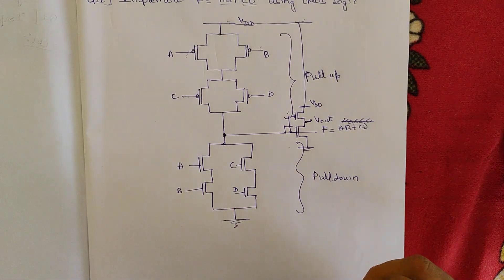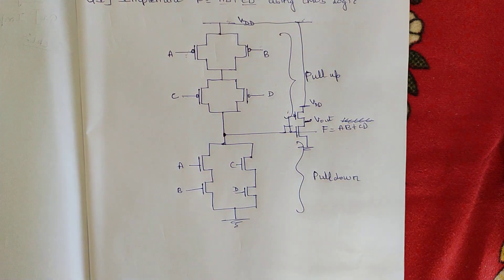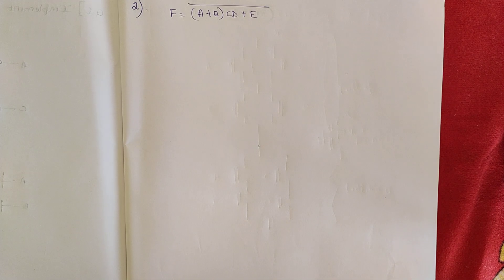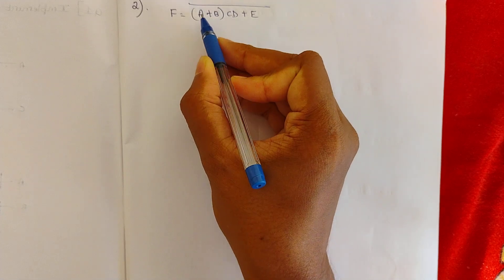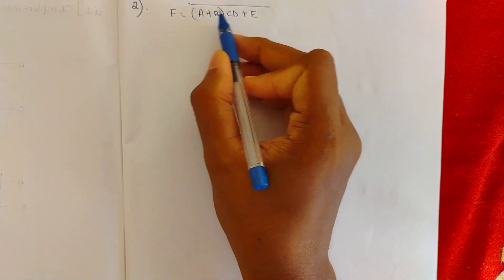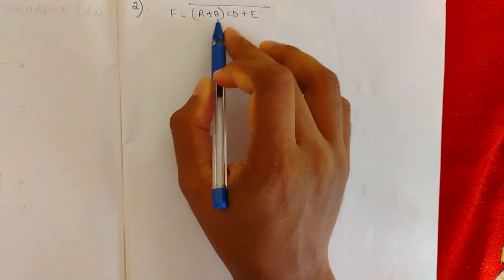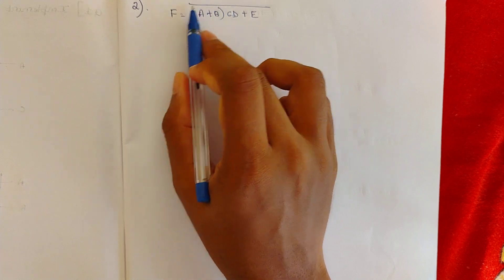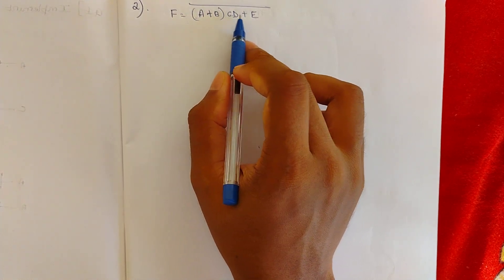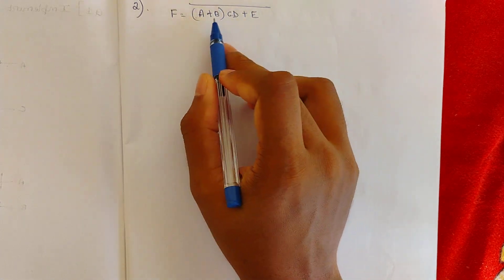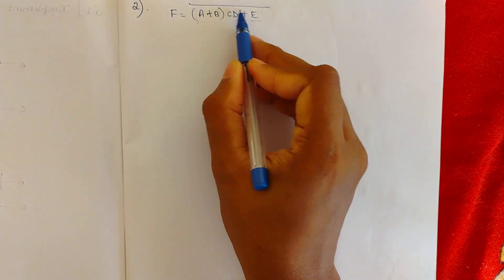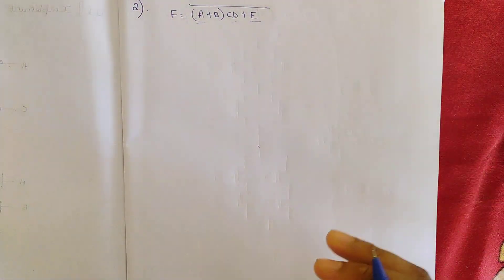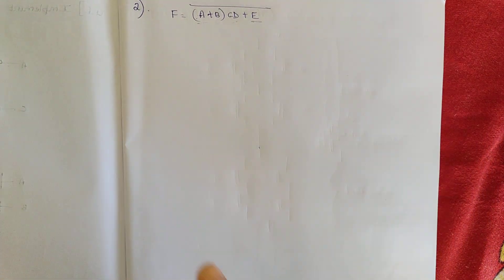Let us see a few more equations and draw the circuits. This is the next equation: F = ((A+B)·CD + E)̄. First see the expression clearly — A plus B, so in the pull-up PMOS part those transistors are in series. It is then multiplied by CD, where C and D are multiplied so they form parallel branches. After drawing A and B in series and C and D in parallel, the whole term is added with E, so this whole branch and E are in series in the PMOS pull-up network.